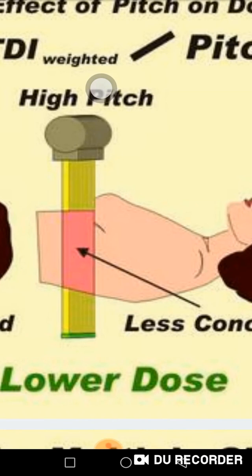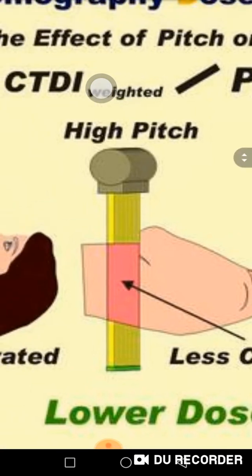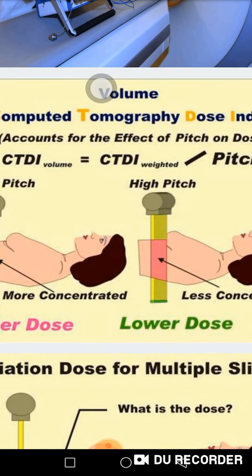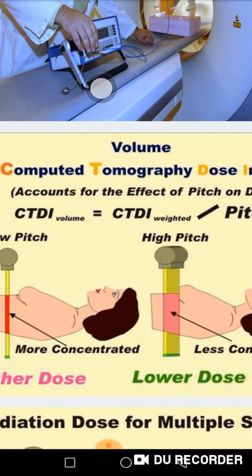Milliampere increases patient dose, and the lower the pitch factor — meaning slower table movement — the higher the dose that reaches the patient. I set the pitch factor in the device while working, adjusting it according to the type of examination, whether I have a child, overweight patient, or thin patient, and depending on the region being imaged and whether high or lower resolution is required. The pitch factor is very, very important as it influences both dose and image quality.